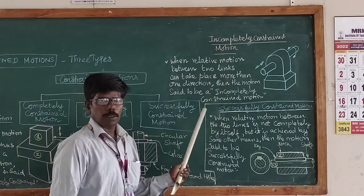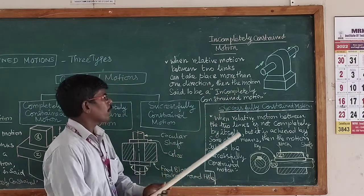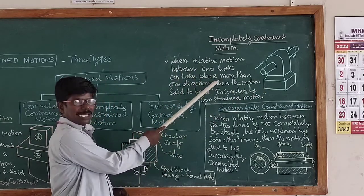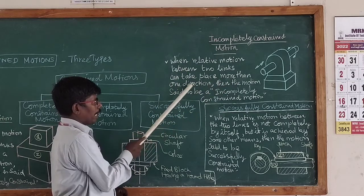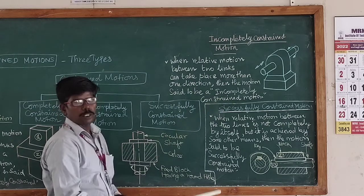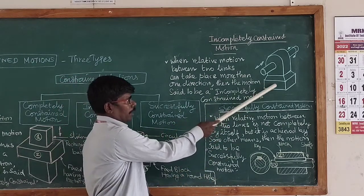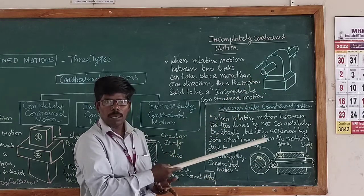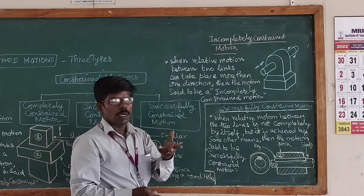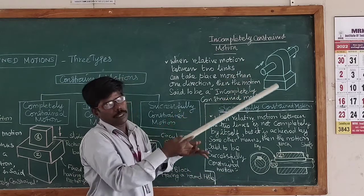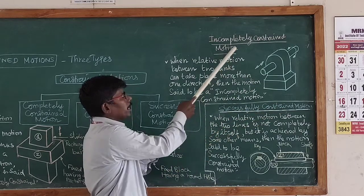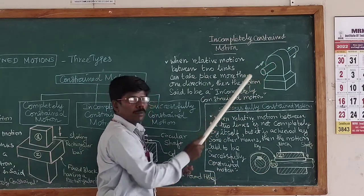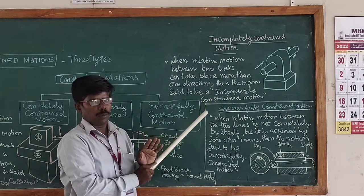Now let's look at the incompletely constrained motion and its definition using the diagram. When the relative motion between two links can take place in more than one direction, then the motion is said to be an incompletely constrained motion. In this fixed block, the shaft will rotate in one direction, and this motion is called incompletely constrained motion.